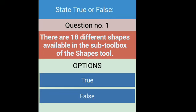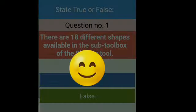Now let's start the True or False. The first question is: there are eighteen different shapes available in the subtool box of the shapes tool. How many shapes are available in the shapes tool? There are sixteen different shapes, not eighteen. So this is false — the right answer.